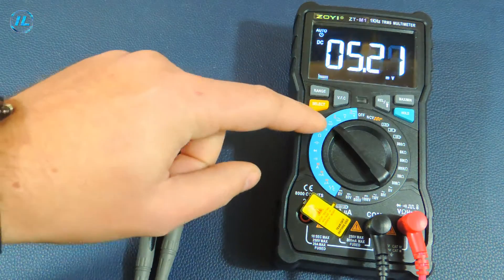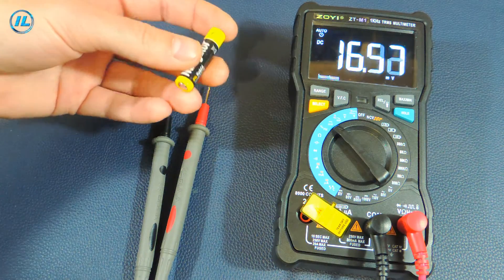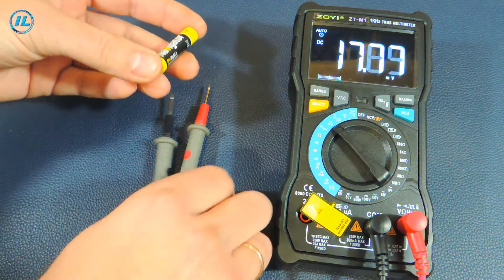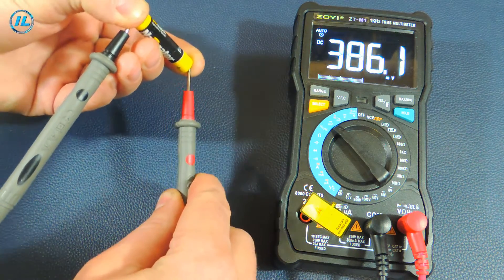The next point is the measurement of a small DC voltage, that is, millivolts. I found an almost completely discharged battery. Let's see how much voltage she has: 386 millivolts.